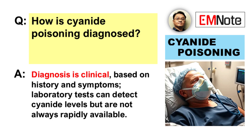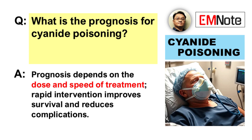How is the diagnosis made, especially in urgent settings? It's primarily clinical, based on history and presenting symptoms. While blood cyanide levels can be measured, results are rarely available in time to guide immediate management. What does the prognosis look like? Prognosis depends heavily on dose and time to treatment. Rapid recognition and early antidote administration significantly improve outcomes.